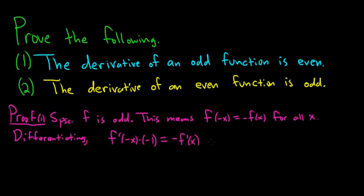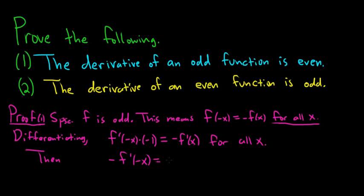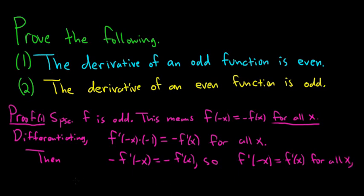This is true for all x. So then, let's simplify: we have negative f prime of negative x equals negative f prime of x. Dividing both sides by negative 1, we get f prime of negative x is equal to f prime of x. That's precisely what it means for a function to be even, and this is true for all x. So this shows that f prime is even.